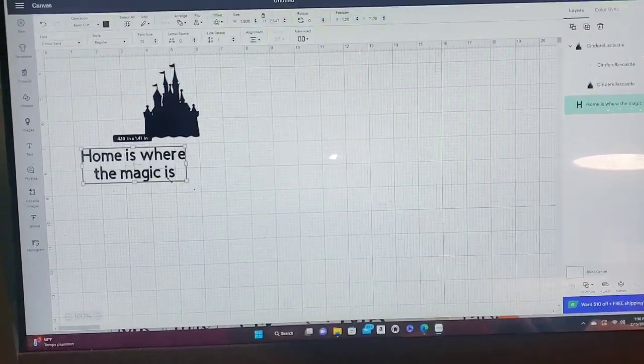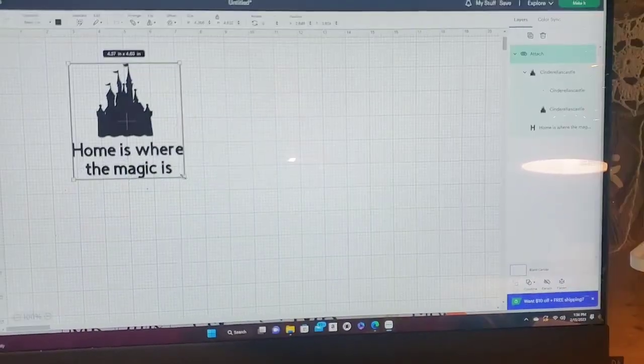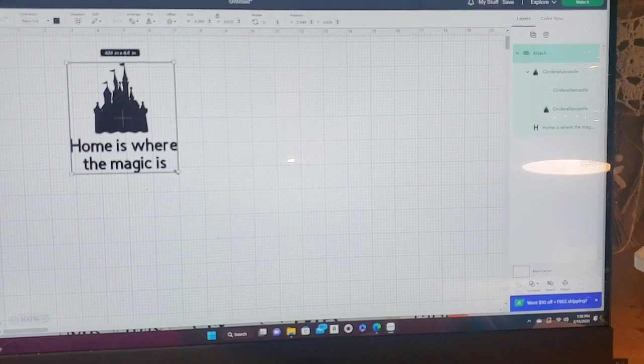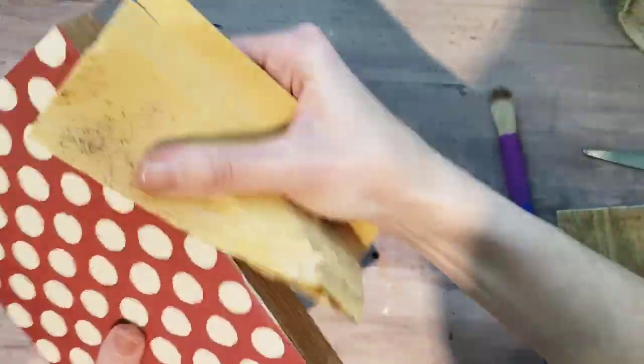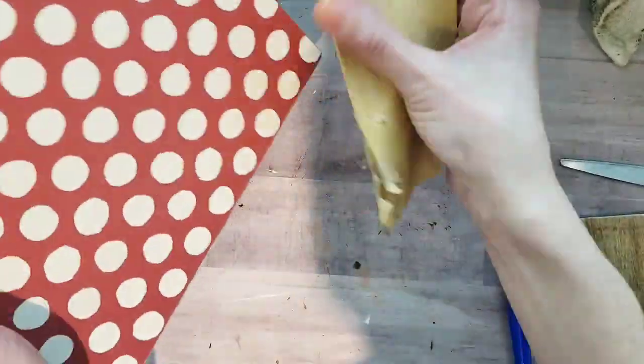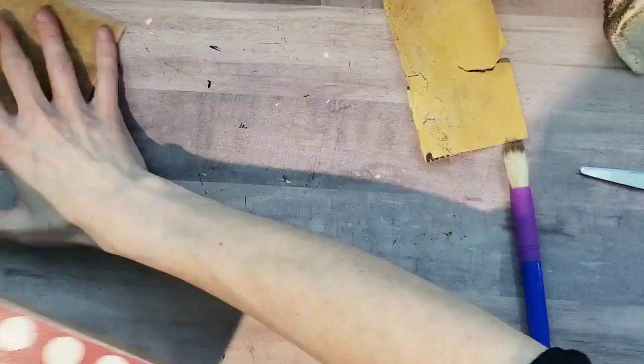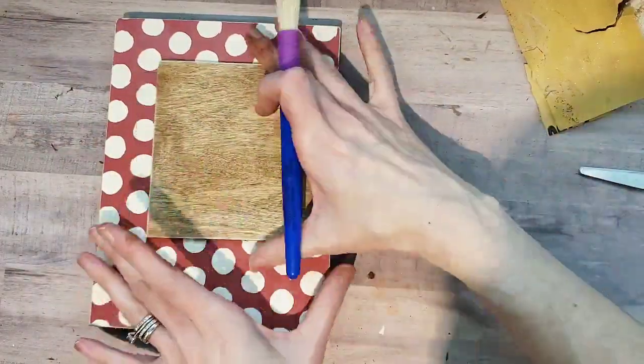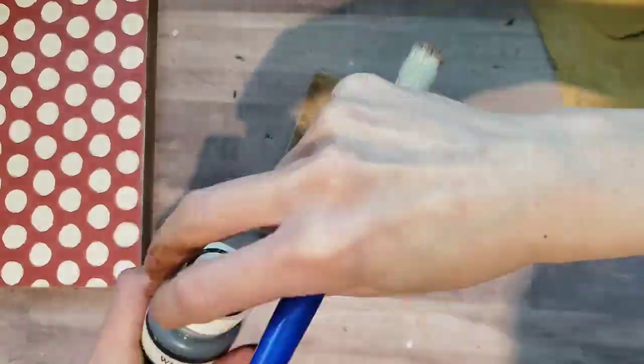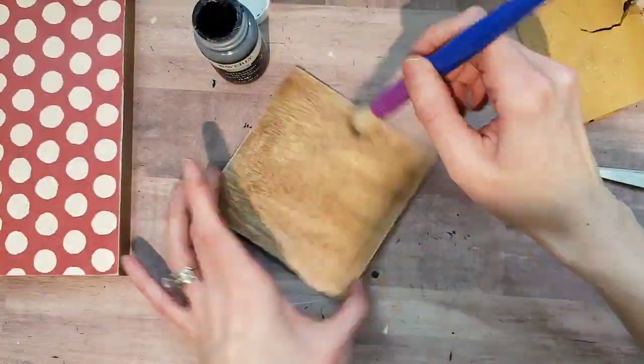I really like this saying, home is where the magic is, with that Disney castle. Now you can pick up your Disney images on Etsy. You can get a big bundle pack of images. If you do not have a Cricut, there are stamps out there and stickers as well with Disney images on them. As you can see right now, I'm just sanding the corners, sanding the edges, just so it gives it that nice finished look.